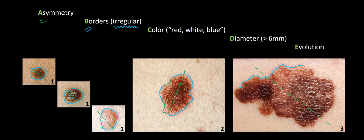The next feature is C for color, and specifically the red flag is color variation within a lesion. The benign nevi may be different colors from each other — due to melanin being produced at different depths within the skin — but within each individual lesion the color is pretty homogeneous. In contrast, the malignant melanoma has patches of very dark pigment and patches of lighter pigment, and it's this internal color variation that signals a potentially malignant process. The dysplastic nevus also shows some slight color variation, but to a lesser degree than the melanoma.